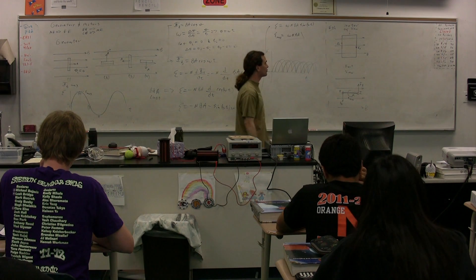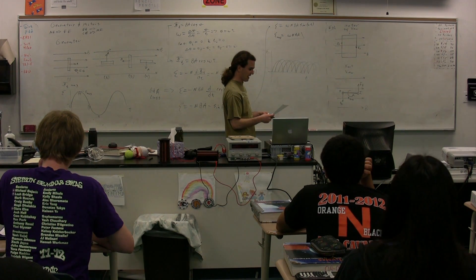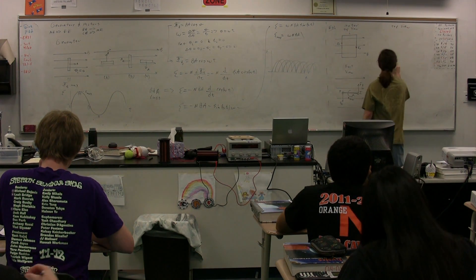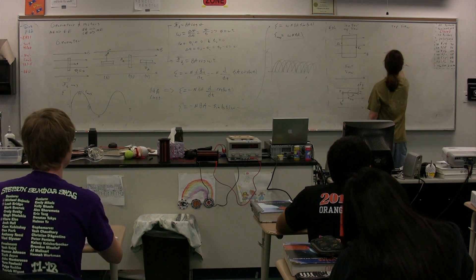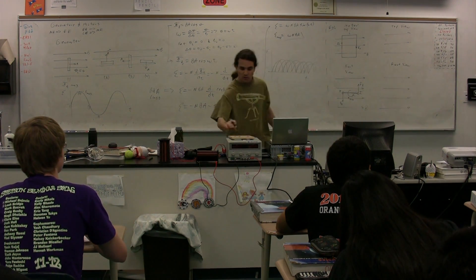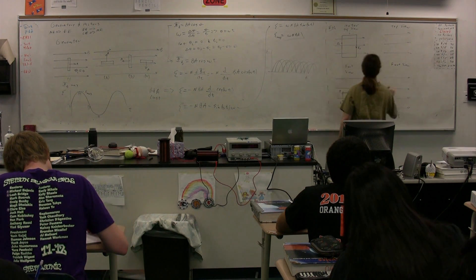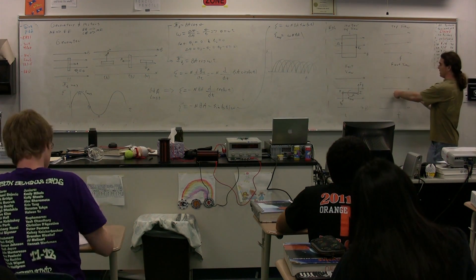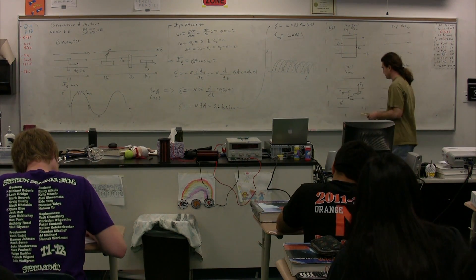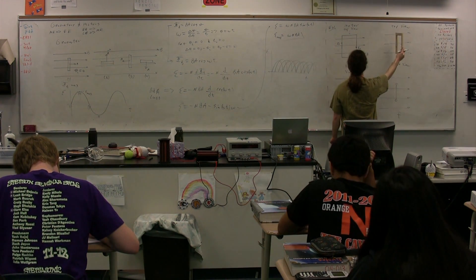We're just going to talk about what happens when it moves through 90 degrees. It would just keep moving because we'd have the commutator and such, but we're not going to worry about that right now. So this is our initial position. We've determined that it rotates in this direction, so we're going to turn it 90 degrees. In our final position, it's going to be oriented like this.